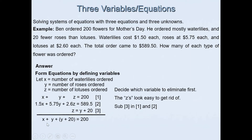Substituting into the first equation: x + y + (y + 20) = 200, which simplifies to x + 2y + 20 = 200. Moving the constant gives x + 2y = 180. This is our fourth equation.